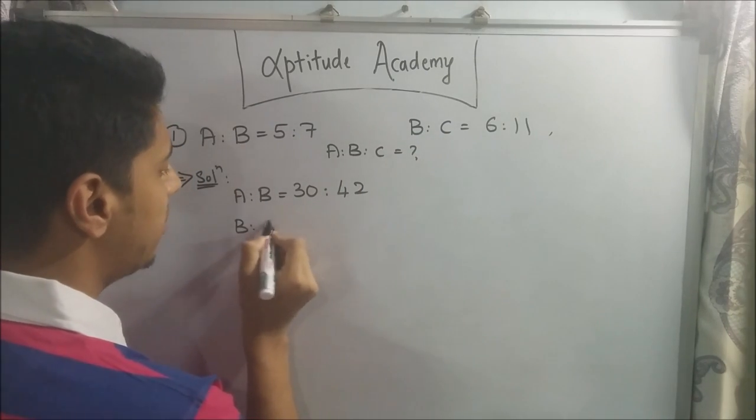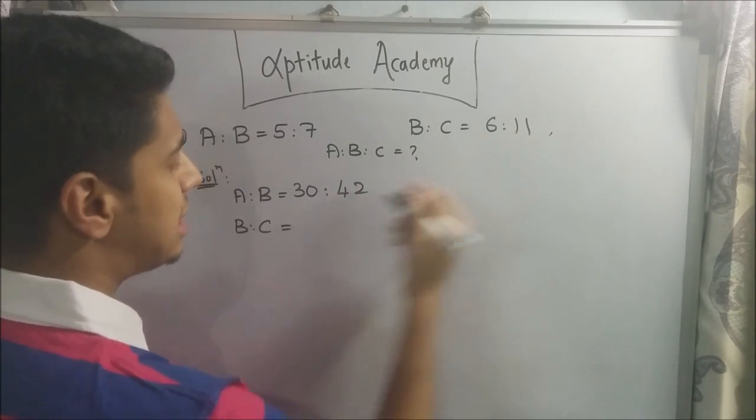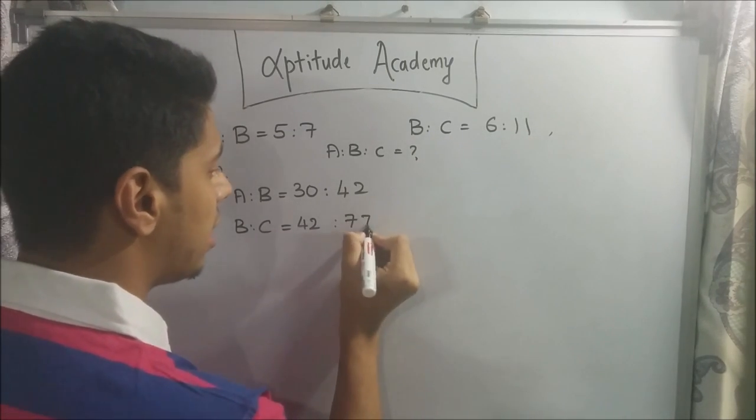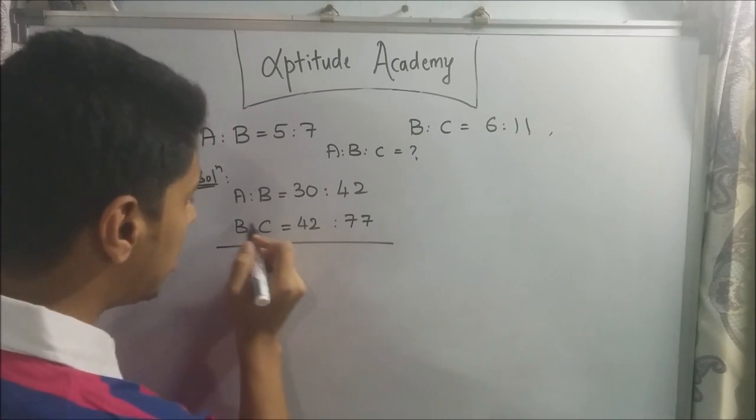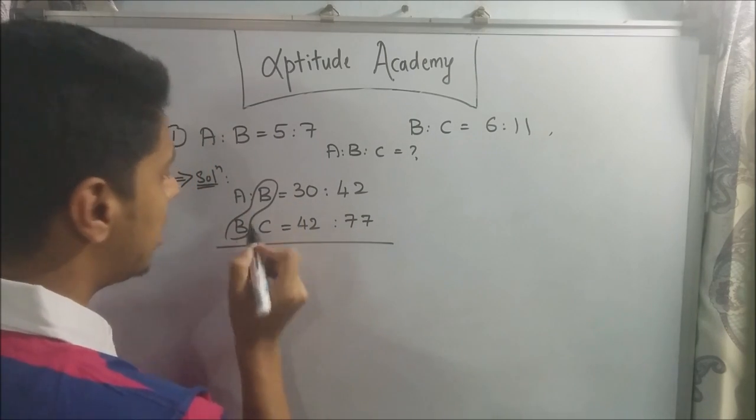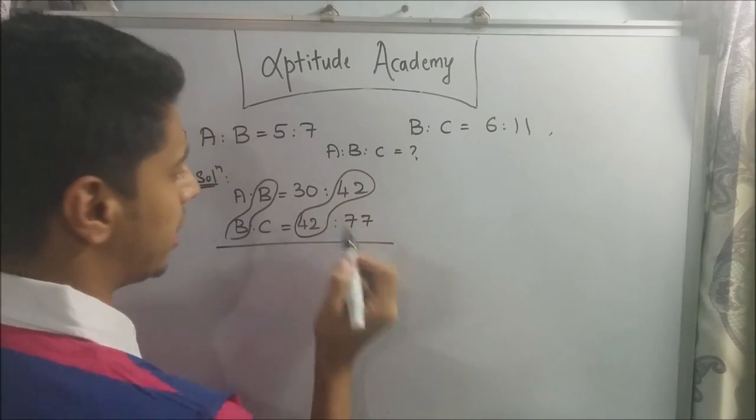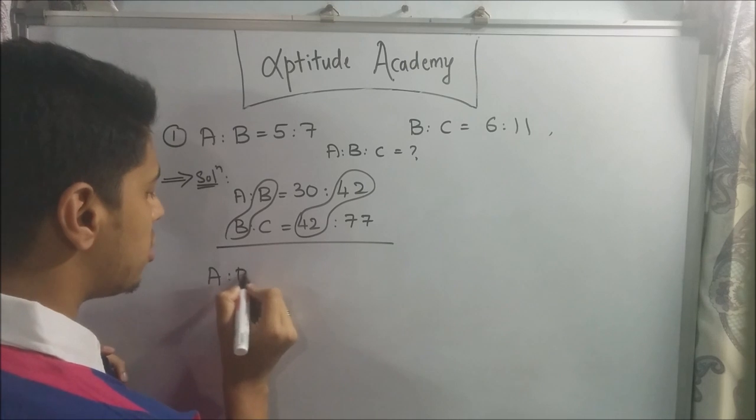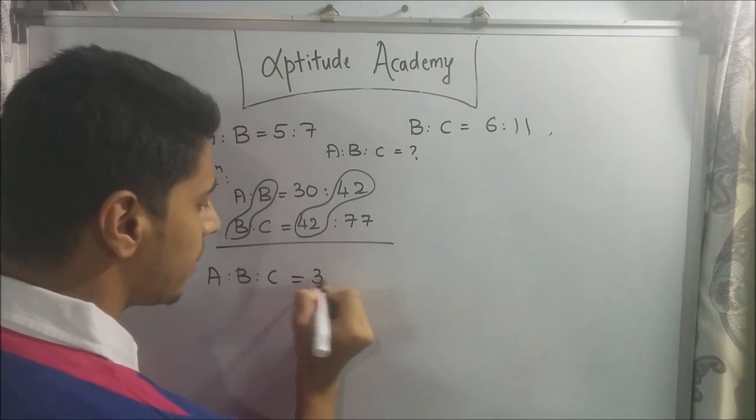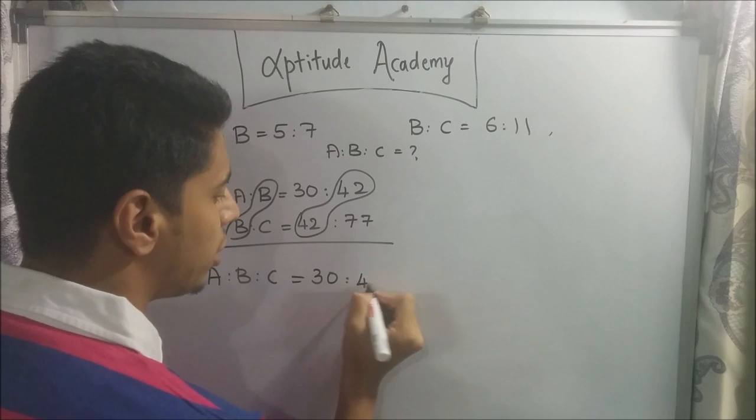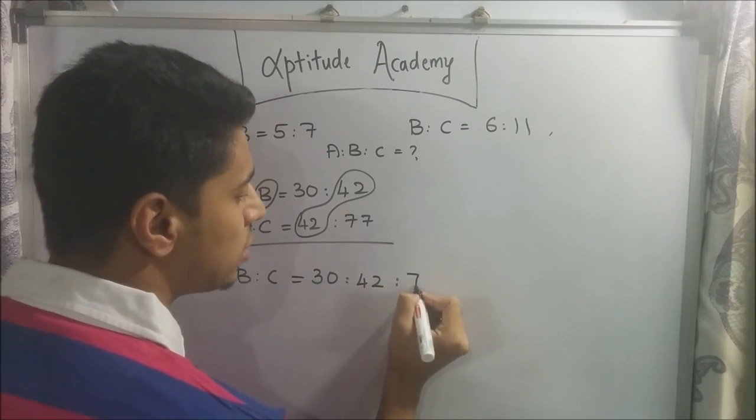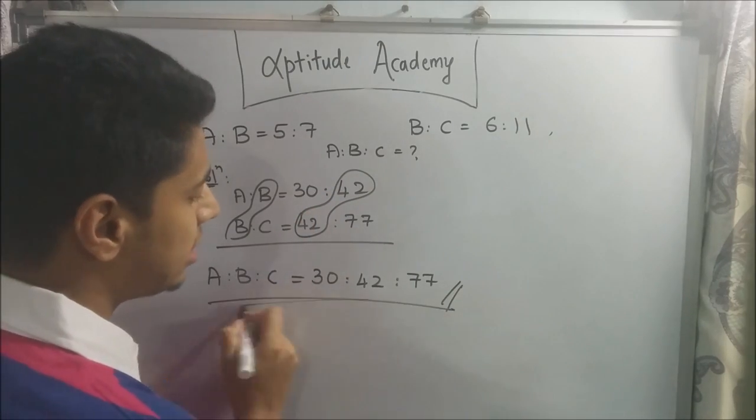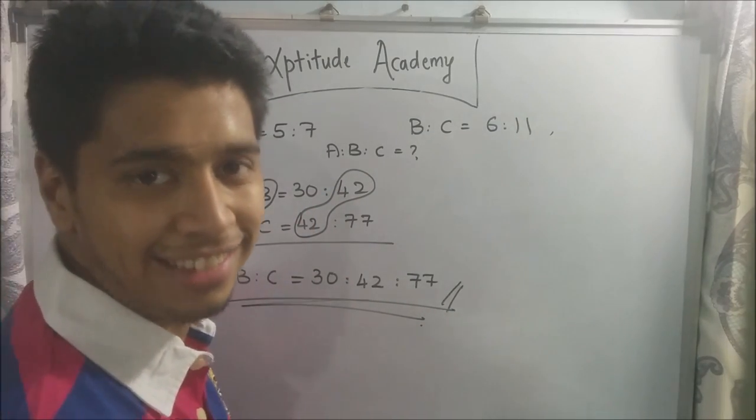So b is to c, if I multiply it by 7, 7, 6 is 42. And 11, 7 is 77. Now you can see that I've got b is common here and I've got 42 common. So I can join these together. Now I can write a is to b is to c is equal to 30 is to 42 is to 77. I can join this because now both of these are the same quantities. So this is your final answer. Easy? Let's go on to problem number 2.